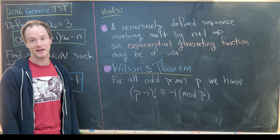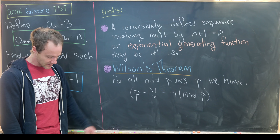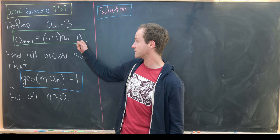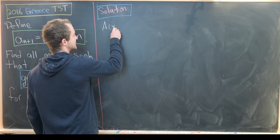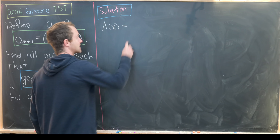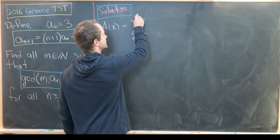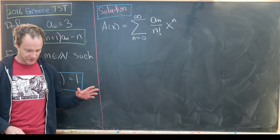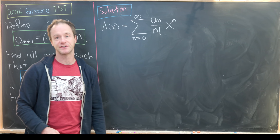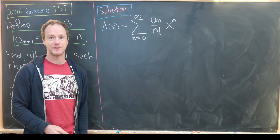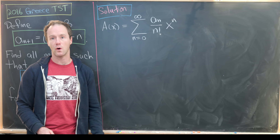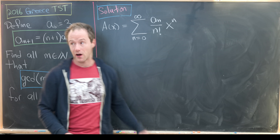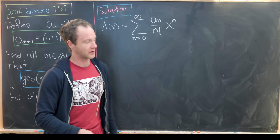Let's start by defining the exponential generating function for our sequence. We'll call it A(x), equal to the sum as n goes from 0 to infinity of aₙ over n! times xⁿ. This differs from an ordinary generating function in that we divide every term by n!. It's called an exponential generating function because if all the aₙ's were 1, we'd get exactly the Taylor series for eˣ.